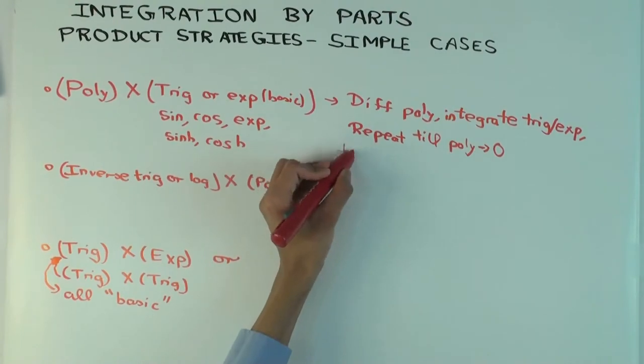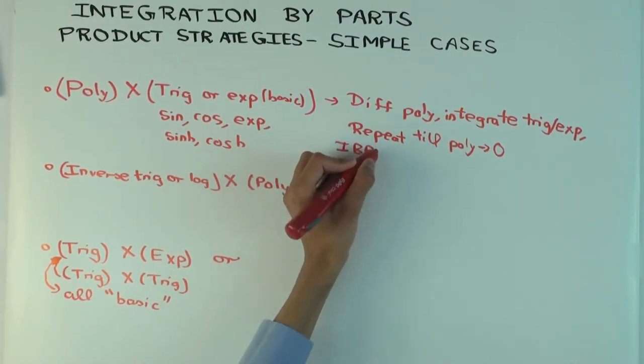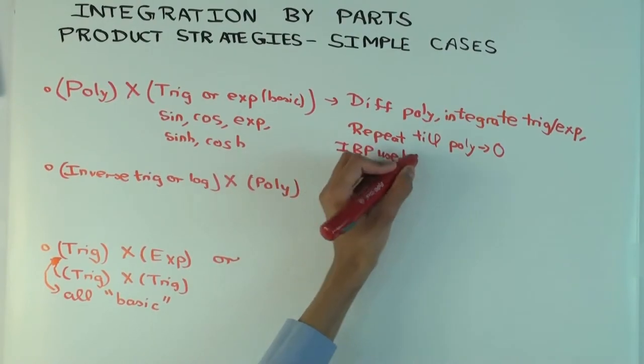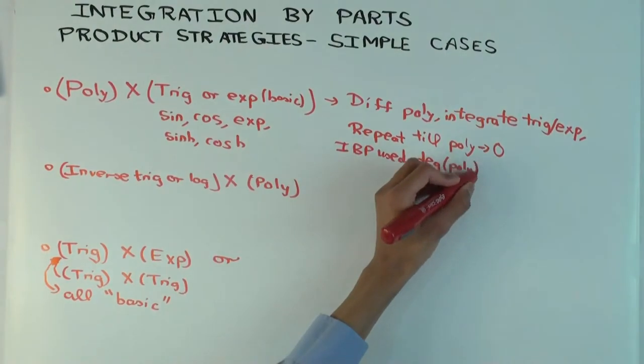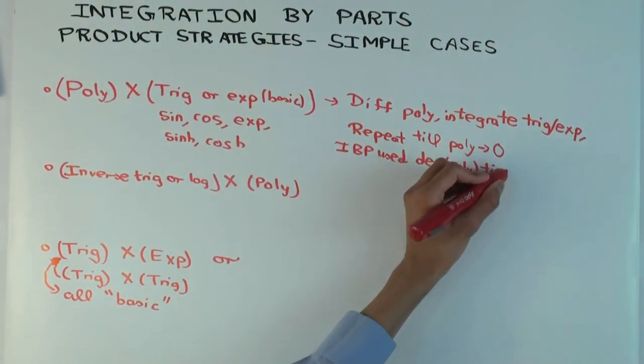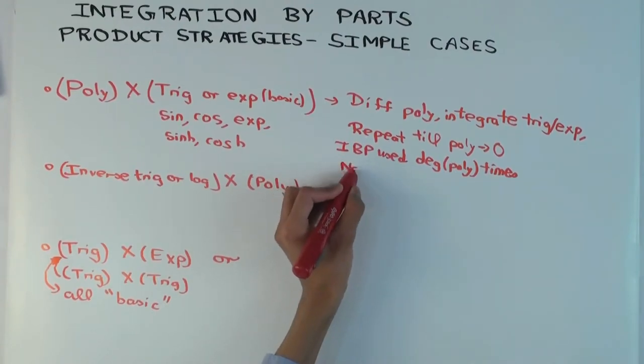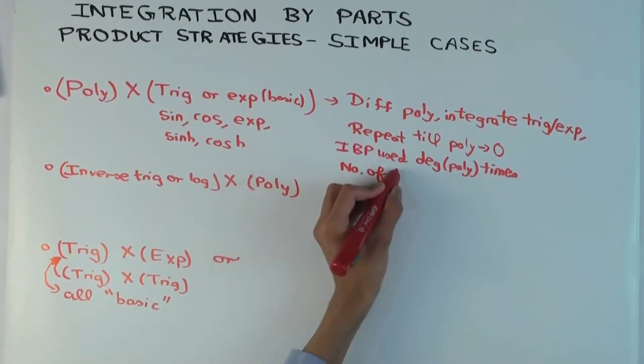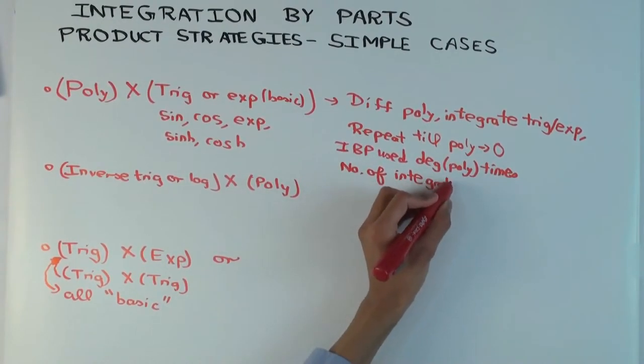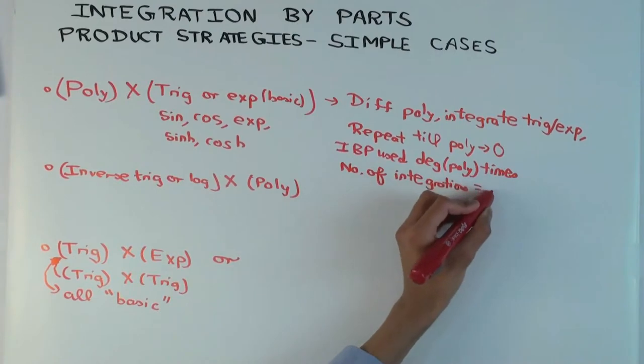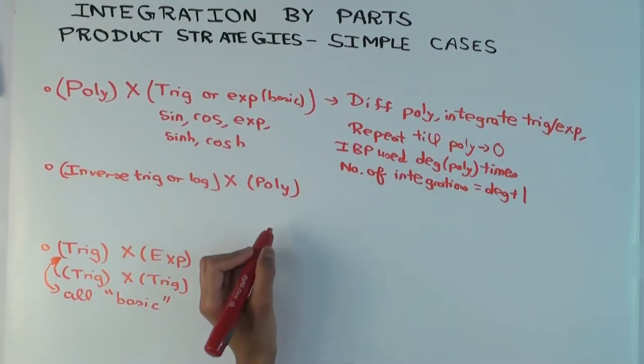So integration by parts will be used degree of poly times. But the number of times you actually do integrations will be one more than the number of times you use integration by parts. The actual number of integrations will be the degree plus 1. So we'll see examples of this in a separate video.